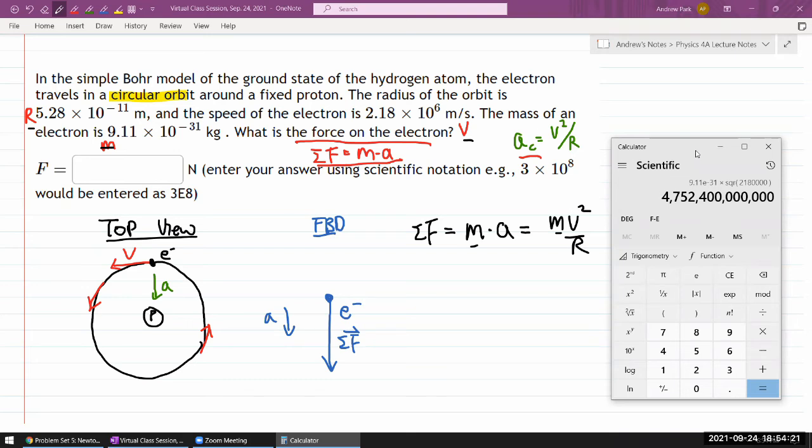Okay, so M V squared. Now, over R. So divided by the radius of the orbit. That's 5.28 times 10 to the power of, that's this, minus 11. So 11 and then minus. Okay, so M V squared over R. That's it. And you get, oh, 8.20 times 10 to the power of minus 8 Newton.